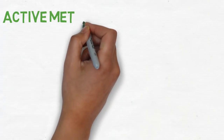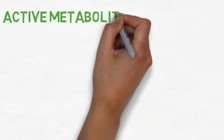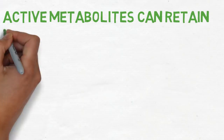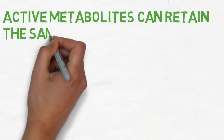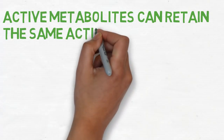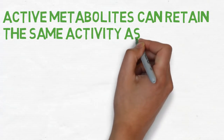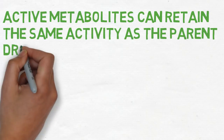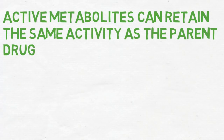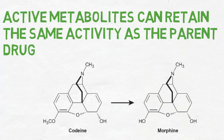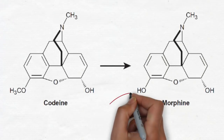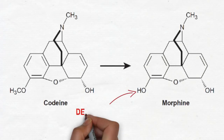On the other hand, an active metabolite can mean that the metabolite retains the same activity as the parent drug. That is apparent when codeine is demethylated to a more active drug, which is morphine.